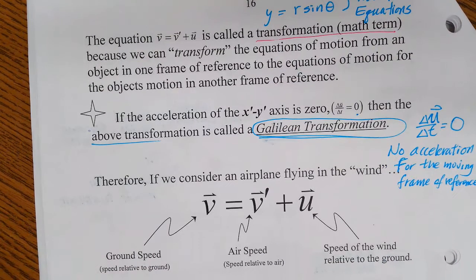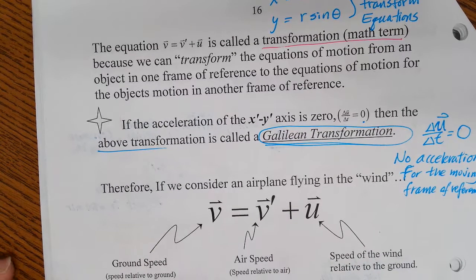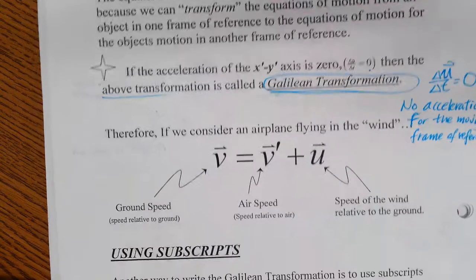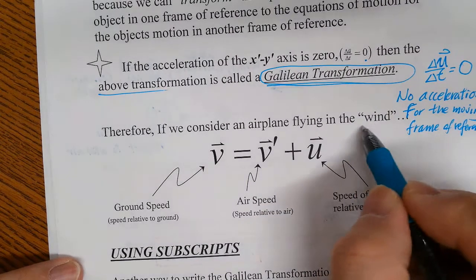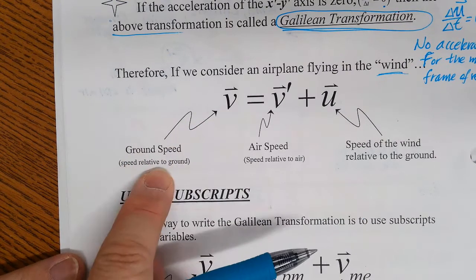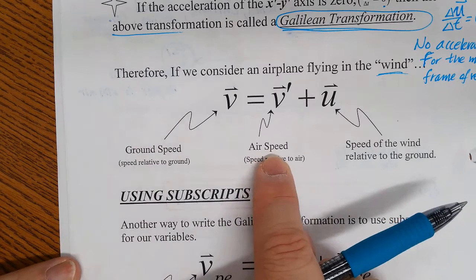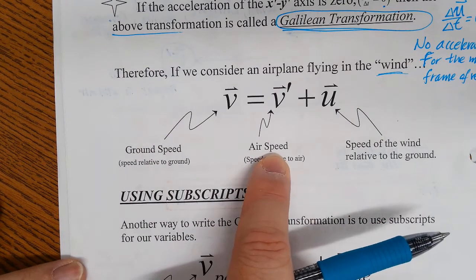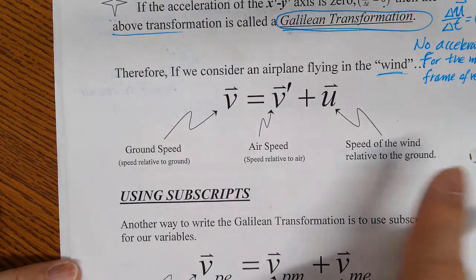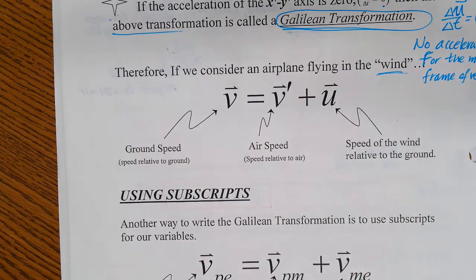We're not looking at the airplane when it's taking off; we're looking at it cruising at a constant altitude, or a boat not accelerating but moving at constant velocity. So for an airplane flying in wind: ground speed v is the speed relative to the ground, airspeed v prime is how fast the airplane is flying without wind, and u is the speed of the wind itself relative to the ground. Speed relative to the air versus speed relative to the ground are two different things — make sure you understand the difference.